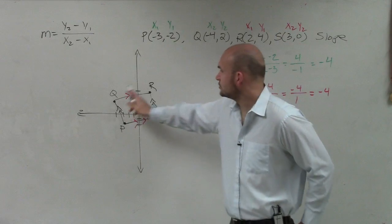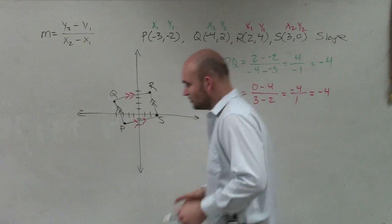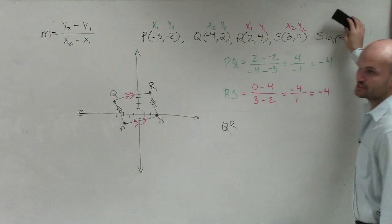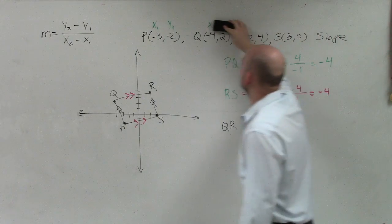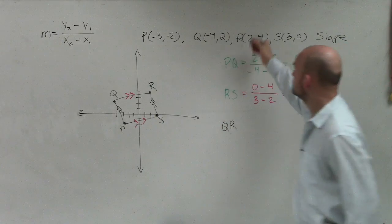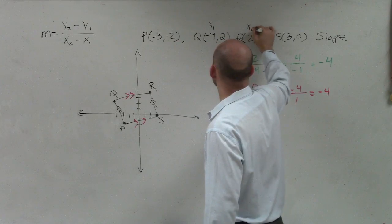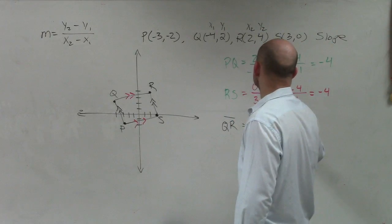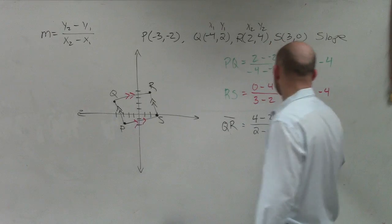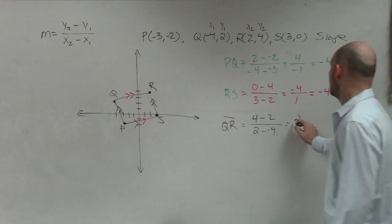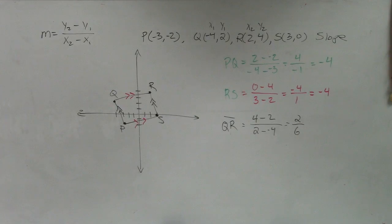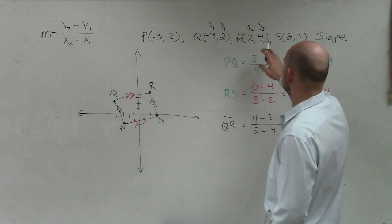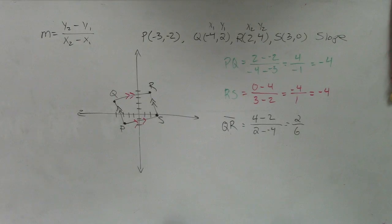Now we've got to confirm these are parallel. So now we've got to find the slope between QR. Since I'm using a pencil, I'm not going to want to confuse myself with what I chose as x1, x2, so I'll delete those and redo it. Between QR, I'll label this x1, this x2, this y1, this y2. For QR, I have 4 minus 2 divided by 2 minus negative 4. 4 minus 2 is 2, 2 minus negative 4 is 6. That equals 1/3.